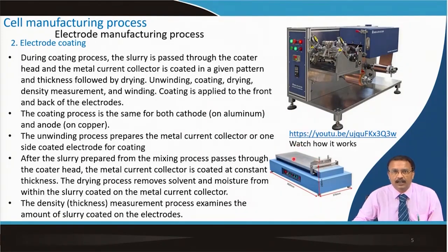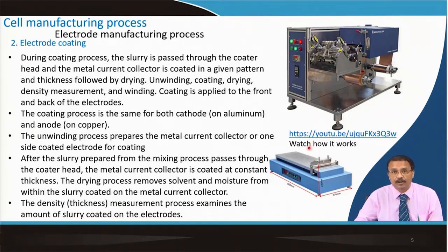A doctor's blade is used for coating. The separation between the blade and the current collector can be adjusted, which fixes the coating thickness, and you can also change the scanning speed — fast or slow. The substrate can be heated so the solvent evaporates and dries right there. The ink prepared in the previous step is put on top of the current collector, the doctor's blade passes over it, and a fine coating of controlled thickness is obtained on the surface.